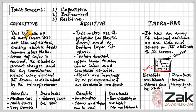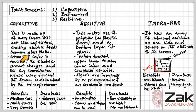Capacitive touch screens are made up of many layers of glass that act like a capacitor, creating electric fields between the glass plates and layers. When the top glass layer is touched, the electric current changes and the coordinates where the screen was touched are determined by an onboard microprocessor.